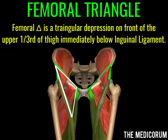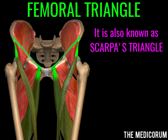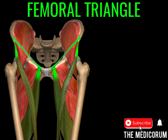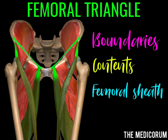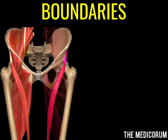The femoral triangle is a triangular depression on the front of the upper one-third of the thigh, lying just immediately below the inguinal ligament. It is also known as Scarpa's triangle. In this video, we will learn about the femoral triangle, its boundaries, contents, and also the femoral sheath and femoral canal.